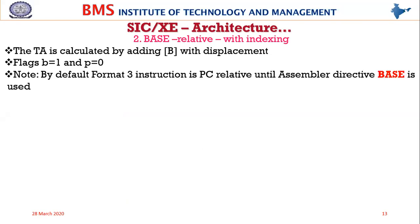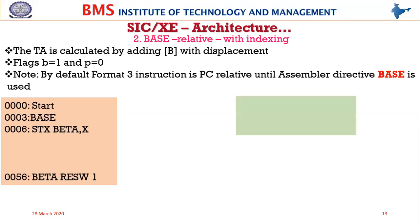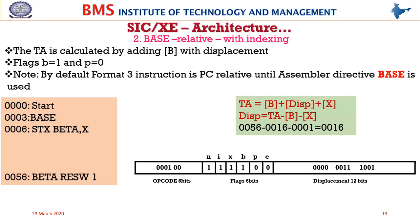Base-relative with indexing has also been covered. In this mode, the contents of the base register are added with the displacement and the contents of the x register; the resulting address is the target address. The displacement is calculated as: target address minus B minus X gives the displacement. Here n and i are one and one, x bit is also one because it uses indexed addressing, b is one because it is base-relative, and p and e are zero.